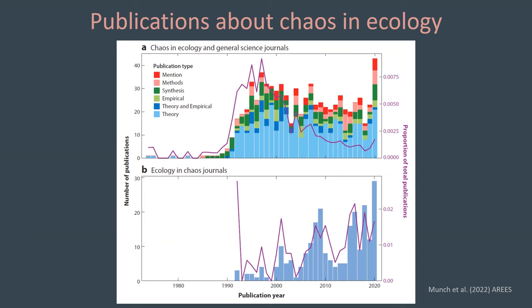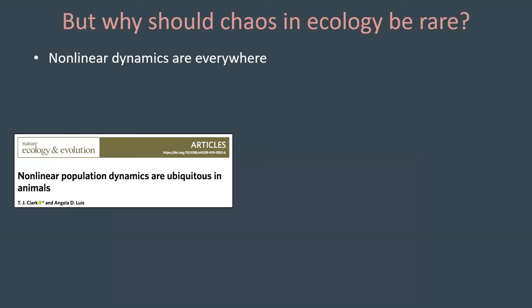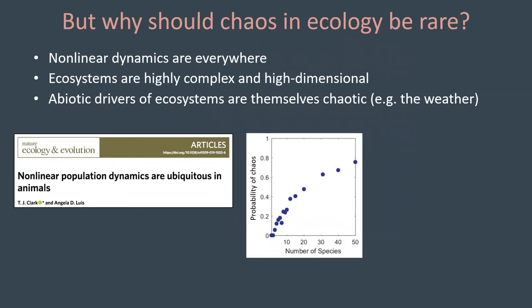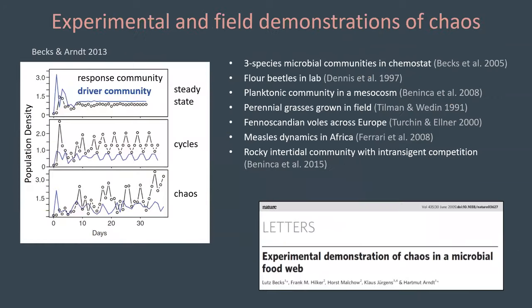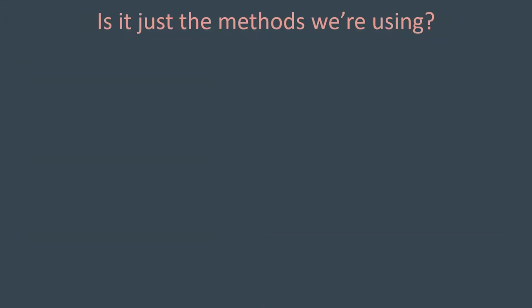This whole idea that chaos is rare may strike you as a bit odd, because why should chaos in ecology be rare, given that nonlinear dynamics — a necessary condition for chaos — are everywhere? We know ecosystems are highly complex and high-dimensional, which promotes chaos. And we know that abiotic drivers of ecosystems, which we know are important, are themselves chaotic — for instance, the quintessential chaotic system known as the weather. Moreover, there have been several robust experimental and field demonstrations of chaos in a variety of well-studied systems. So is it that chaos is impossible to detect in field data, or is it something about the methods we're using to look for it?